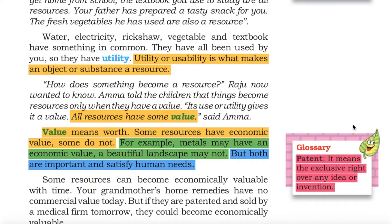The fresh vegetables he has used are also a resource. Water, electricity, rickshaw, vegetables and textbook have something in common — they have all been used by you. So they have utility. Utility or usability is what makes an object or substance a resource.